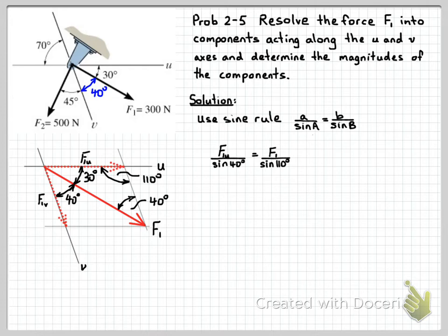So we've substituted that into the sine rule. And we can now rearrange that equation to solve for F1u, which comes out at 205 newtons.